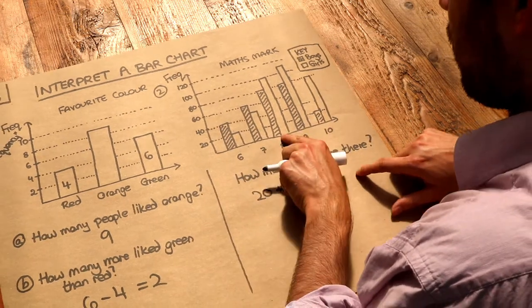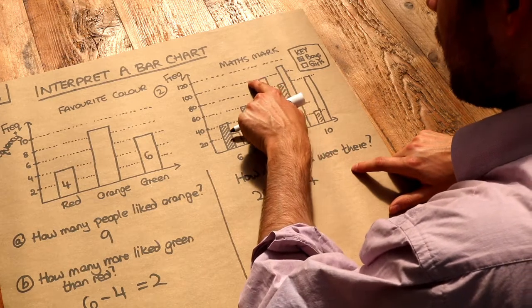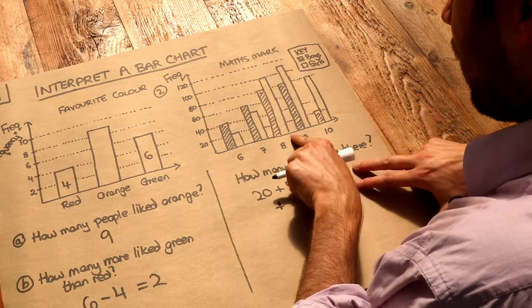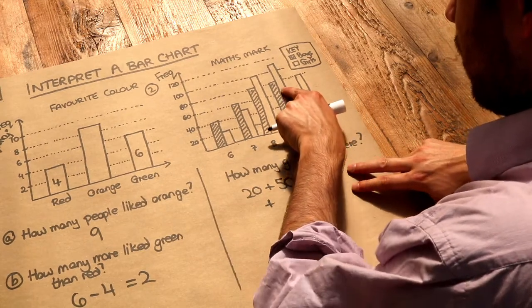How many girls have got 8? Go to the top of that girl bar. We can see that's 100 girls there. Next one, 9 out of 10 marks, go to the top of that bar.